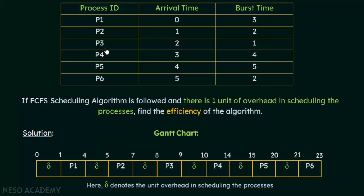Next is P3, but P3 will have to wait for 1 unit of time delay. From 7 to 8 is the delay, and at the 8th unit of time P3 gets the CPU and executes for 1 unit of time — so completion at 9. Before P4 gets the CPU, there is again a delay of 1 unit of time, so 9 plus 1 is 10. When P4 gets the CPU, it executes for 4 units of time. 10 plus 4 is 14, so P4's completion time is 14.